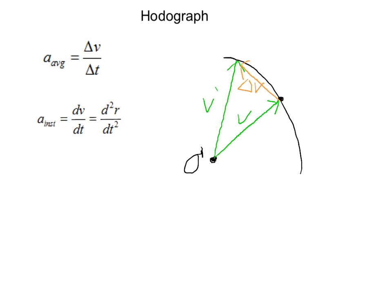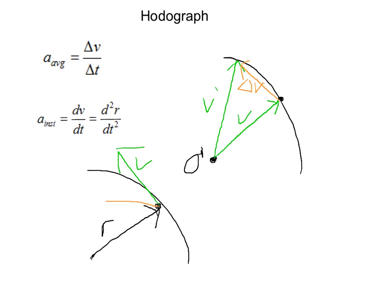To sum it all up, we have a path with a particle, an origin, and position vector r, the velocity v at that point, and the acceleration a at that point.